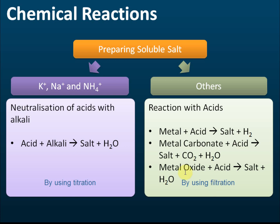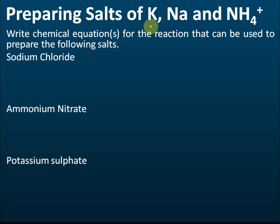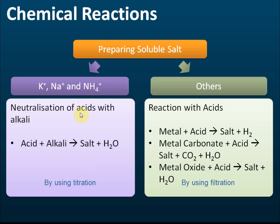I'll explain why for potassium, sodium, and ammonium salts we use neutralization and titration, while for other salts we use the three other acid reactions. For preparing salts of potassium, sodium, and ammonium, we need to write chemical equations. For example: sodium chloride, ammonium nitrate, and potassium sulfate. To prepare these, we must use the reaction between acid and alkali to produce salt and water — the neutralization reaction.